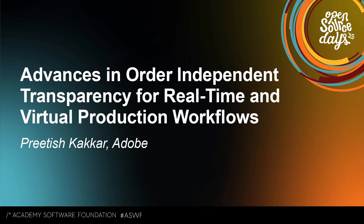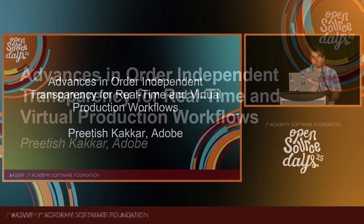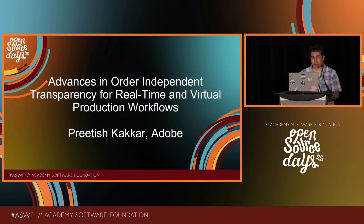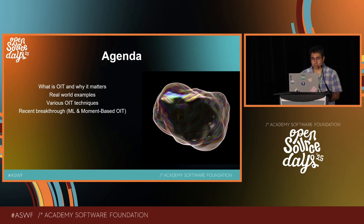I'm going to talk about advances in order-independent transparency for real-time and virtual production workflows. My name is Pritish Kakar. I work as a senior graphics engineer at Adobe. The agenda is going to cover what exactly is order-independent transparency and why it's important, some real use cases and real-world examples, and then we are going to talk about various OIT techniques, including some recent machine learning-based techniques as well as another more advanced technique.